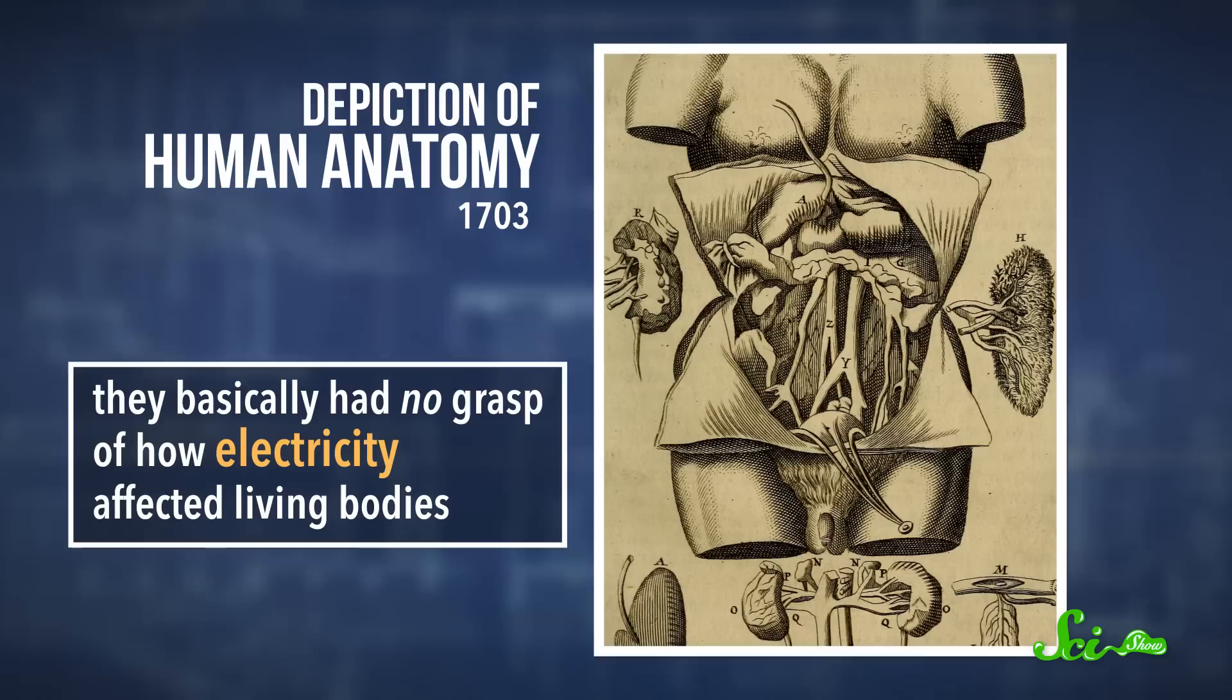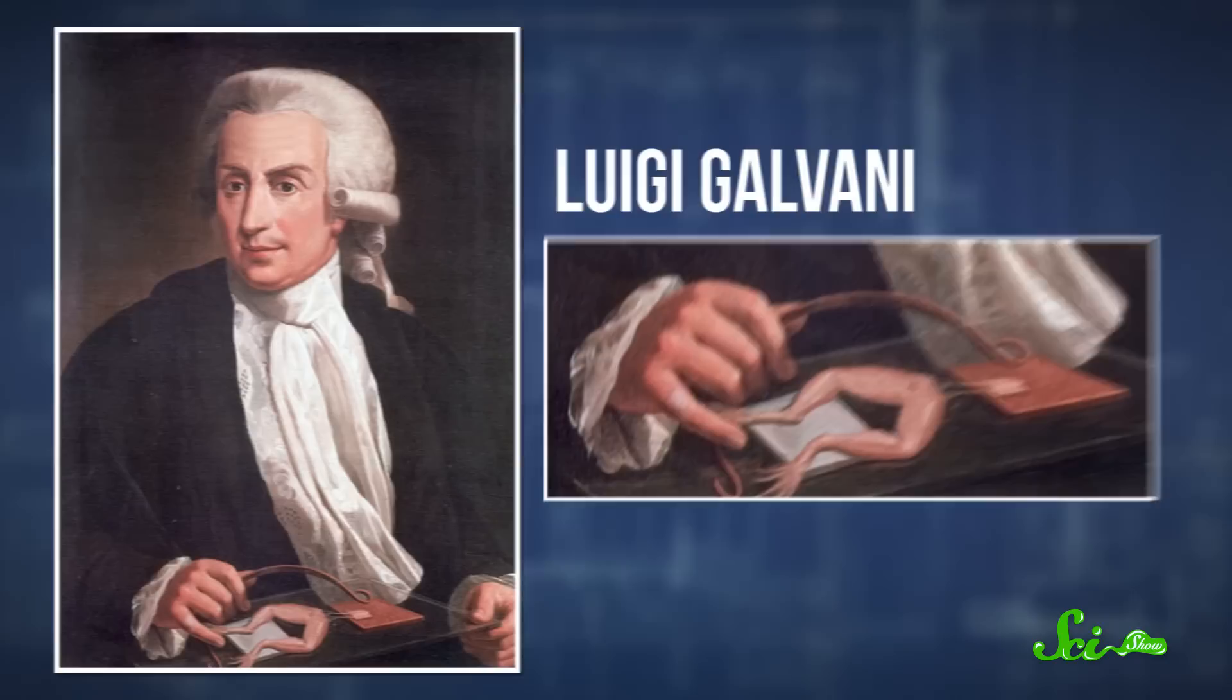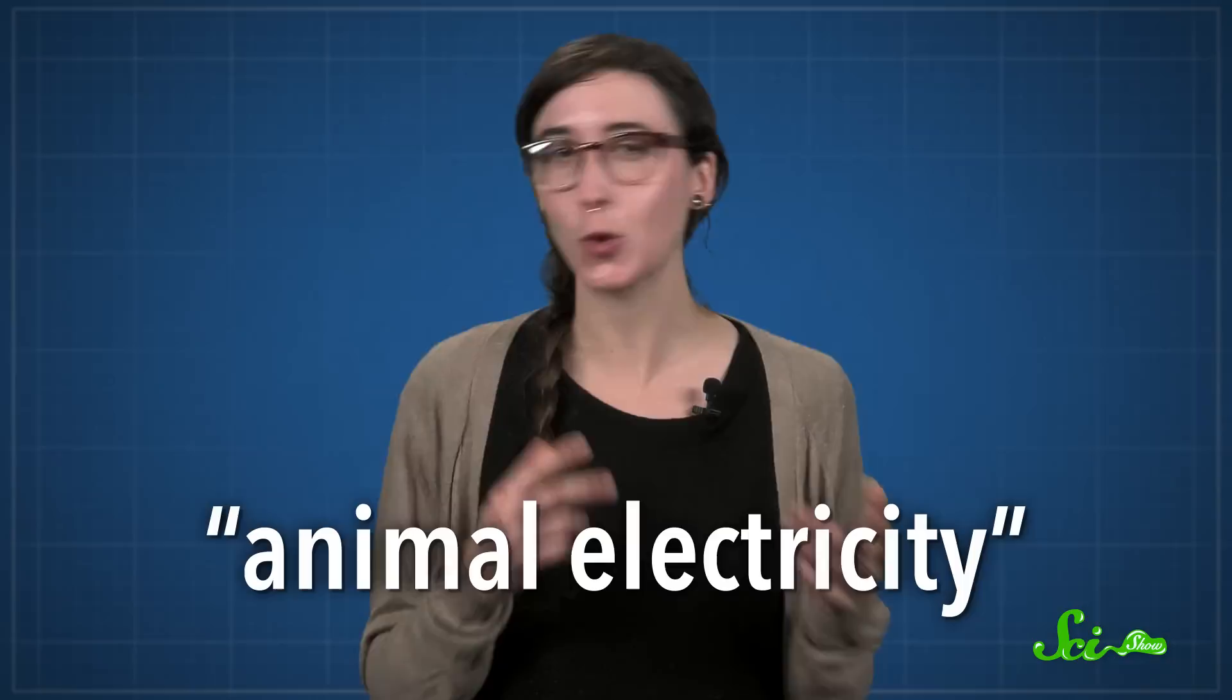Eighteenth-century physicians were learning about human and animal anatomy, but they basically had no grasp of how electricity affected living bodies. The Italian scientist Luigi Galvani was experimenting with dissected frogs, and he found that if he touched two different kinds of metals to their legs, it would make their muscles twitch. Galvani thought the muscles moved because of animal electricity stored within the frog.